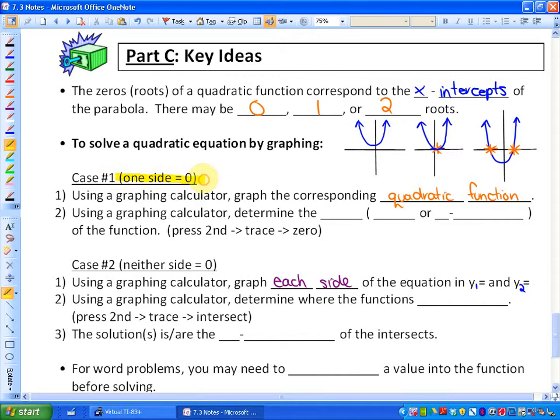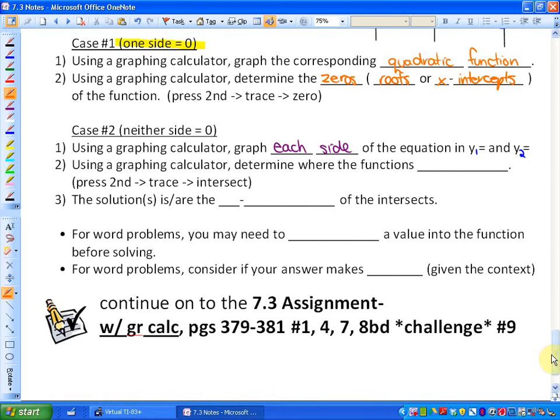And the first way we solved in the original lesson is if one side is equal to zero. So if we were solving an equation like x squared plus 7x plus 12 equals zero, here's what you'd do. Using a graphing calculator, you'd graph the corresponding quadratic function. And then secondly, using a graphing calculator, you would determine the zeros. Which, in other words, are roots or x-intercepts. And on your graphing calculator, if you're using the same one I did, you'd press second, trace, and zero.